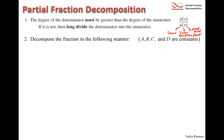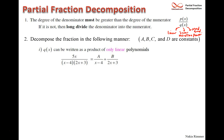For Case 1 — distinct linear factors, e.g., 5x / [(x - 4)(2x + 3)] — each factor in the denominator gets its own fraction with a constant (A, B, etc.) in the numerator. It's an algebra game to work backwards and find what values of A and B allow the decomposition, with the goal of integrating both fractions without trouble.